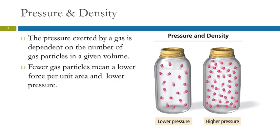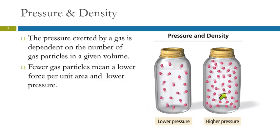The pressure of a gas depends on how many gas particles are in a given volume, which is essentially a concentration. Here we have two jars. This jar has fewer particles and this jar has more particles, so the pressure in this jar is going to be less. These particles are moving around and hitting the walls, but there are fewer of them in the same volume. So this is higher pressure and this is lower pressure.